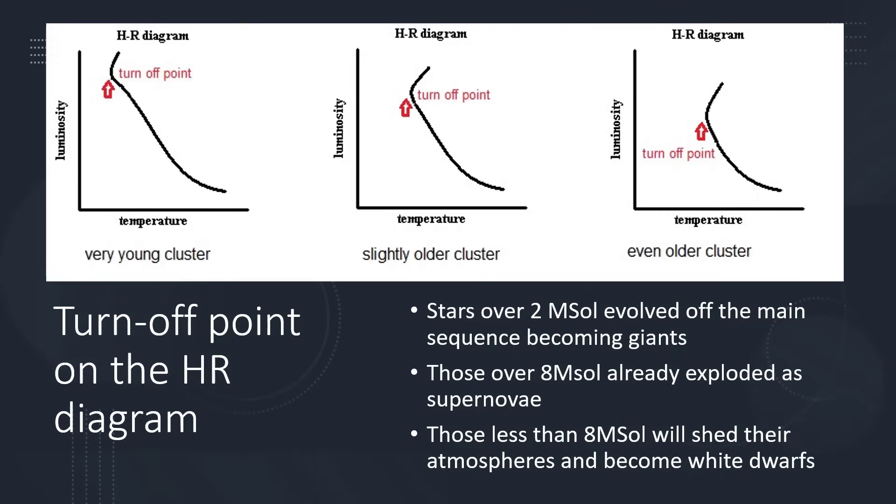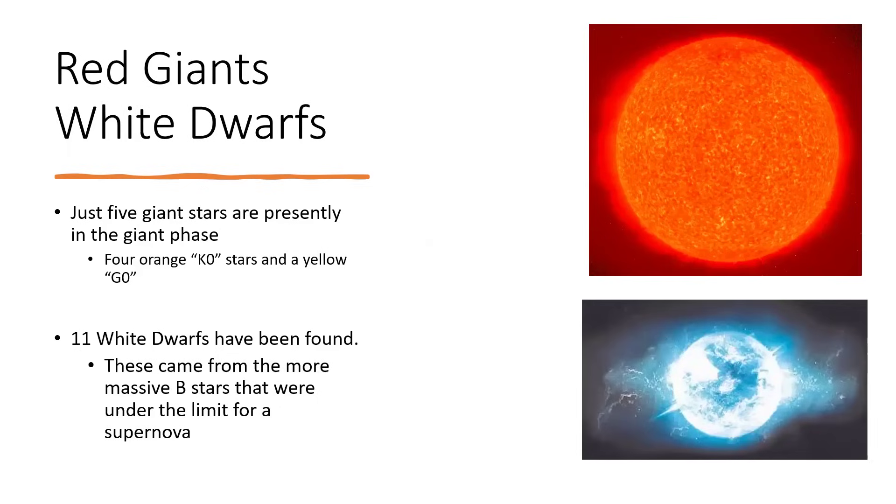In the Beehive Cluster, anything over about eight times the mass of the sun exploded long ago as a supernova. Those guys would only live for a hundred million years or so. The smaller ones will have shed their atmospheres and become white dwarfs. When we look in the cluster, what we find is just five of the thousand stars are presently in the red giant phase - four K-class K0 stars, so the hot end of the orange stars, and one that is a yellow giant, a G0 star.